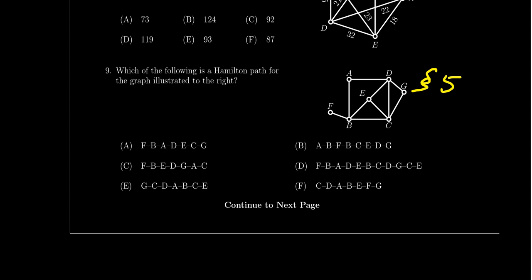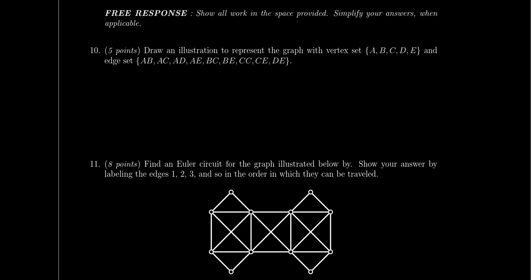That gets us through the multiple choice section — nine questions total, five points each, for 45 points. Select the one correct answer; no partial credit is available. Now we move to the free response section. The total points for each question varies by difficulty, but partial credit is available for partially correct answers or work. You need to show all appropriate work.